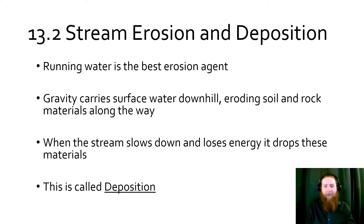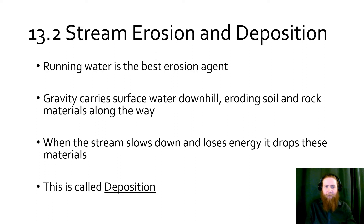Running water is the best erosion agent — it's very good at eroding things. Gravity pulling on everything causes this water to run downhill. As it goes, it picks up loose soil and rock and carries it along. This does a great deal of erosion. Eventually, when the stream comes to a slower part or a lake or ocean, it loses its energy and drops the materials it's been carrying. This process of dropping them is called deposition.